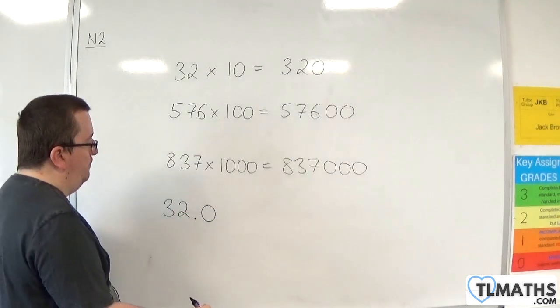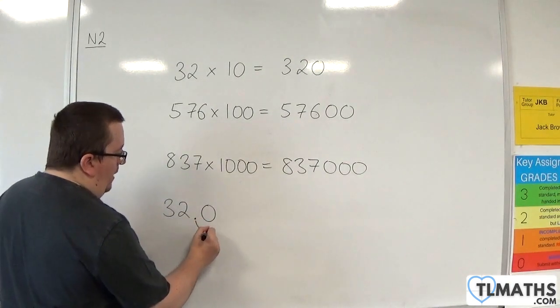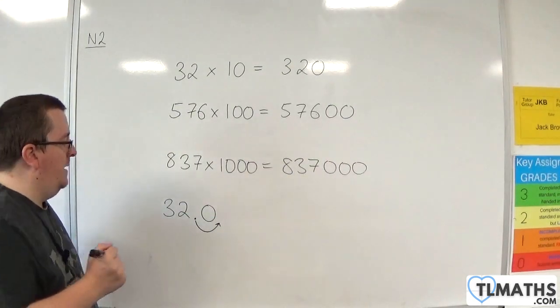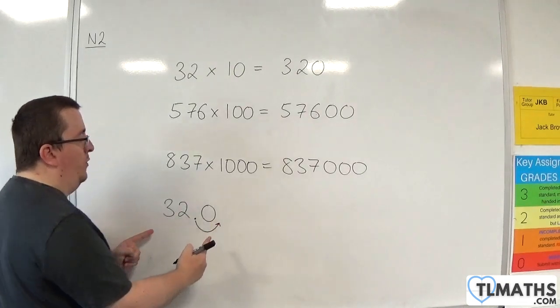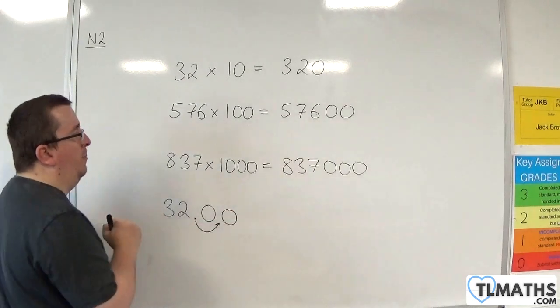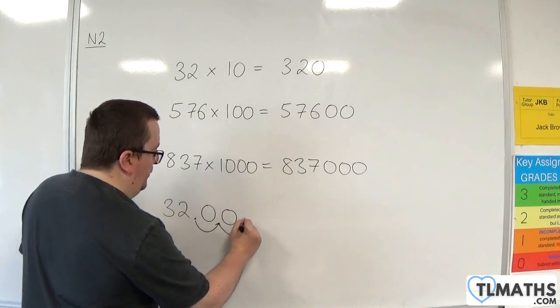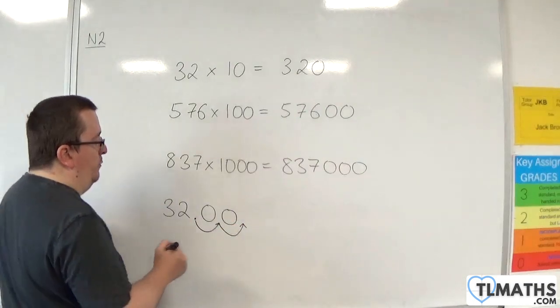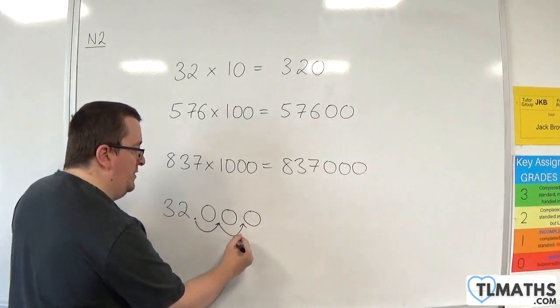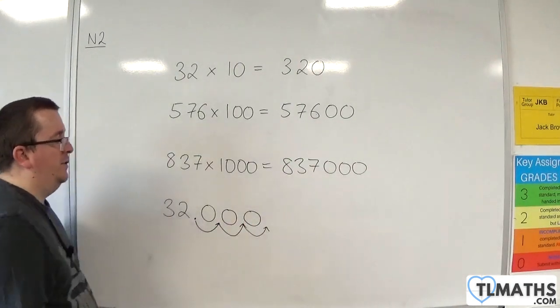So when you multiply by 10, it moves the decimal point one step to the right, and that leaves us with 320. If instead we want to multiply by 100, we move the decimal point two steps to the right. And if we want to multiply 32 by 1,000, we move the decimal point three times along, and that gives us 32,000.